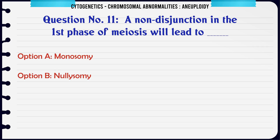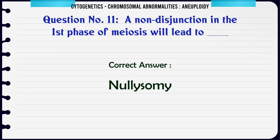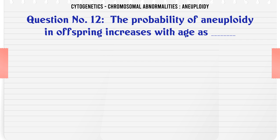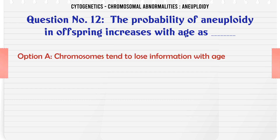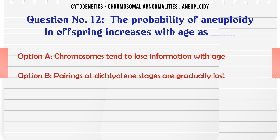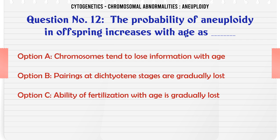A non-disjunction in the first phase of meiosis will lead to: a. Monosomy, b. Nullisomy, c. Dysomy, d. Trisomy. The correct answer is Nullisomy.